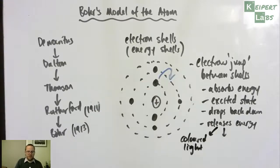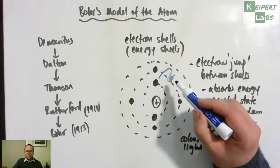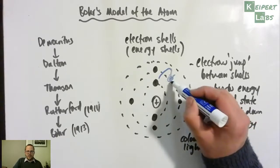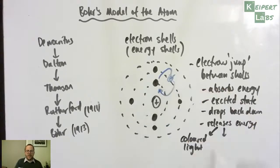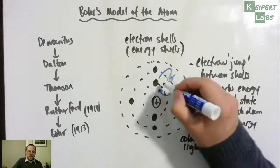If we're looking at our model here, we're seeing that the electron has jumped up by absorbing energy, but it's unstable and it can't stay there. And so what it then does is it drops back down to its previous place, and it gives off coloured light.